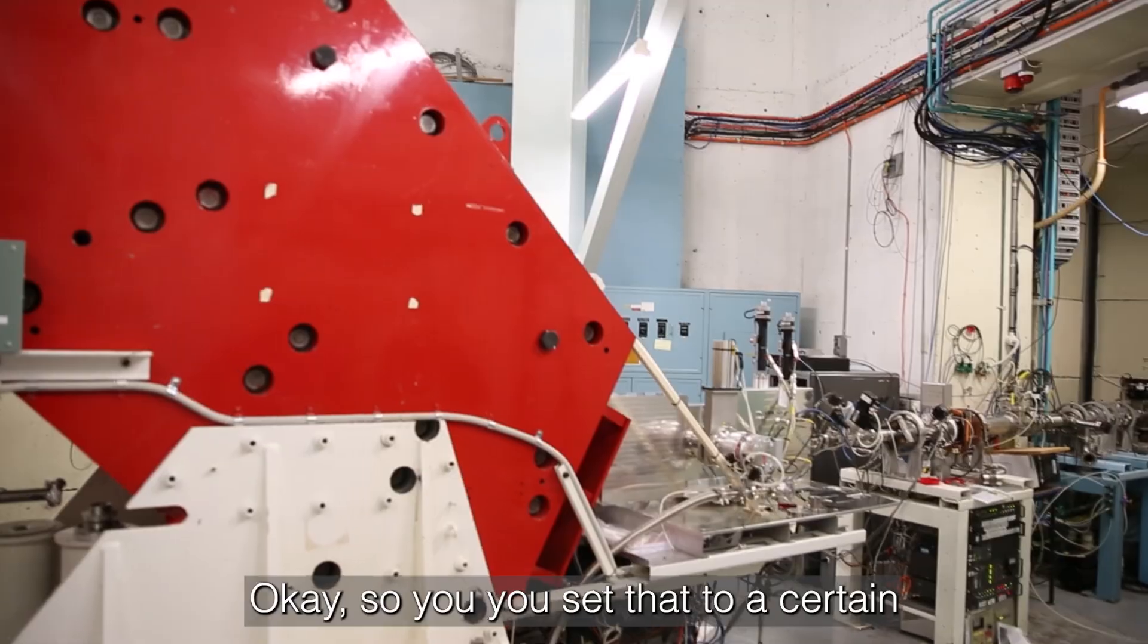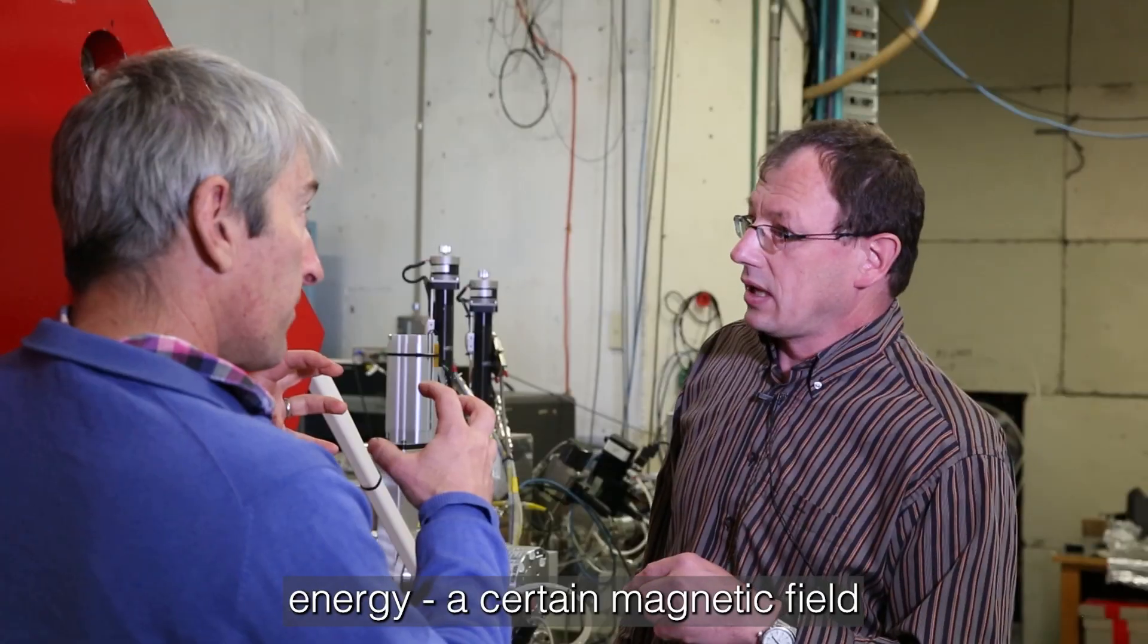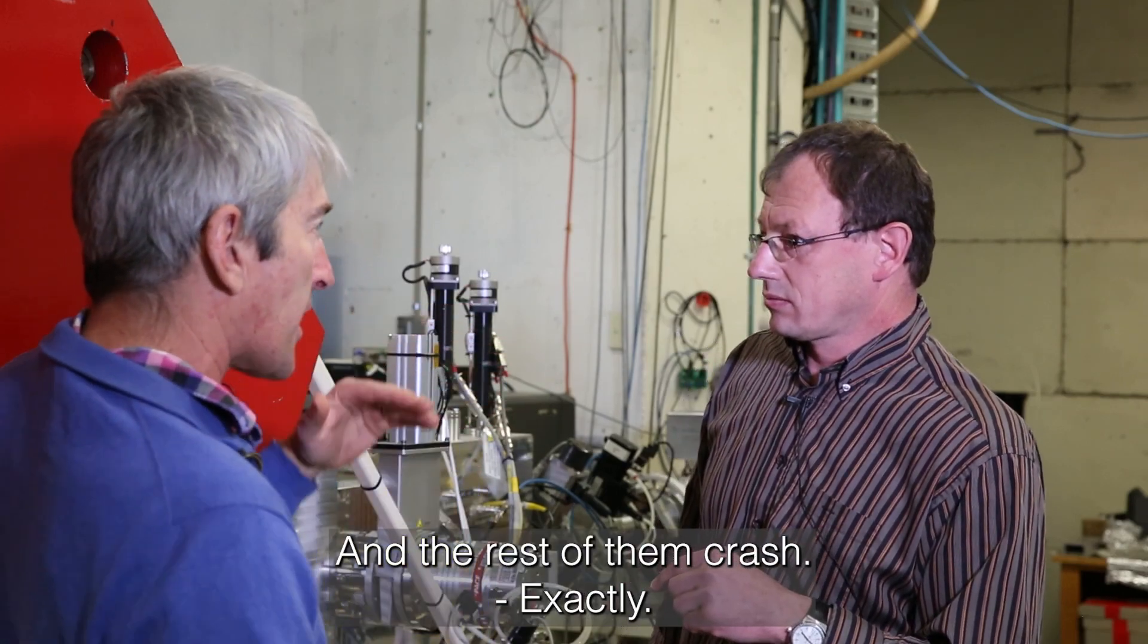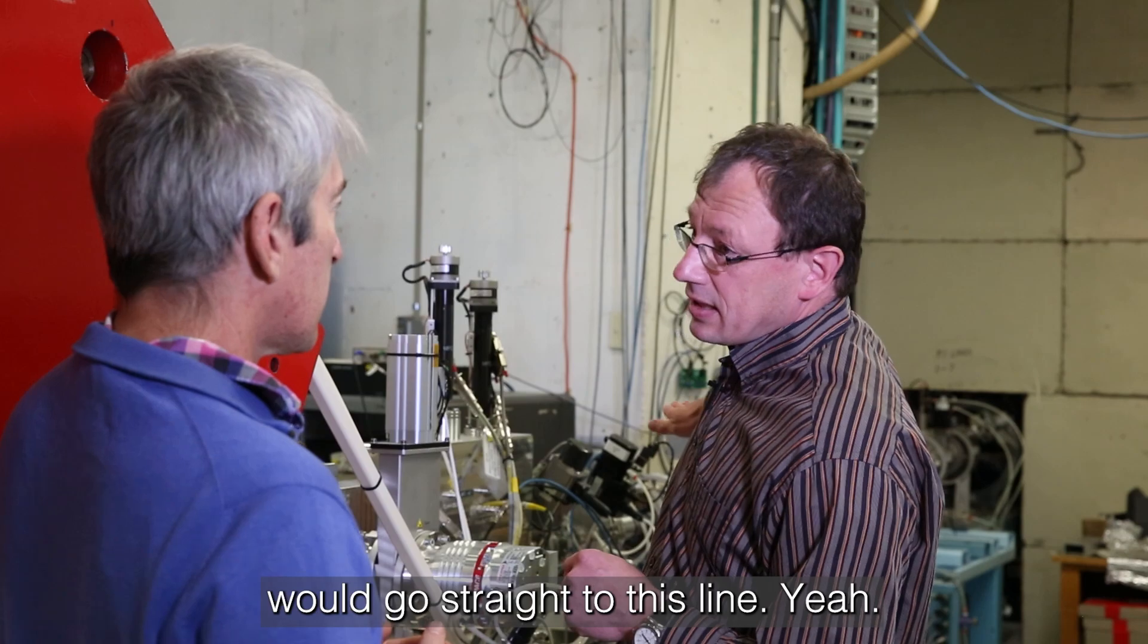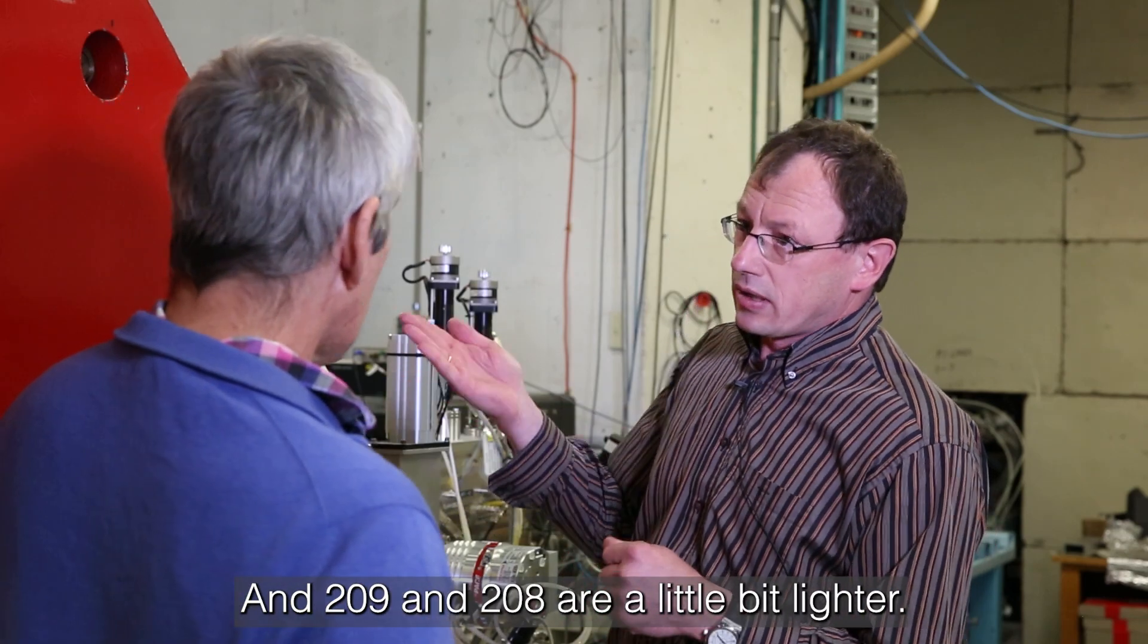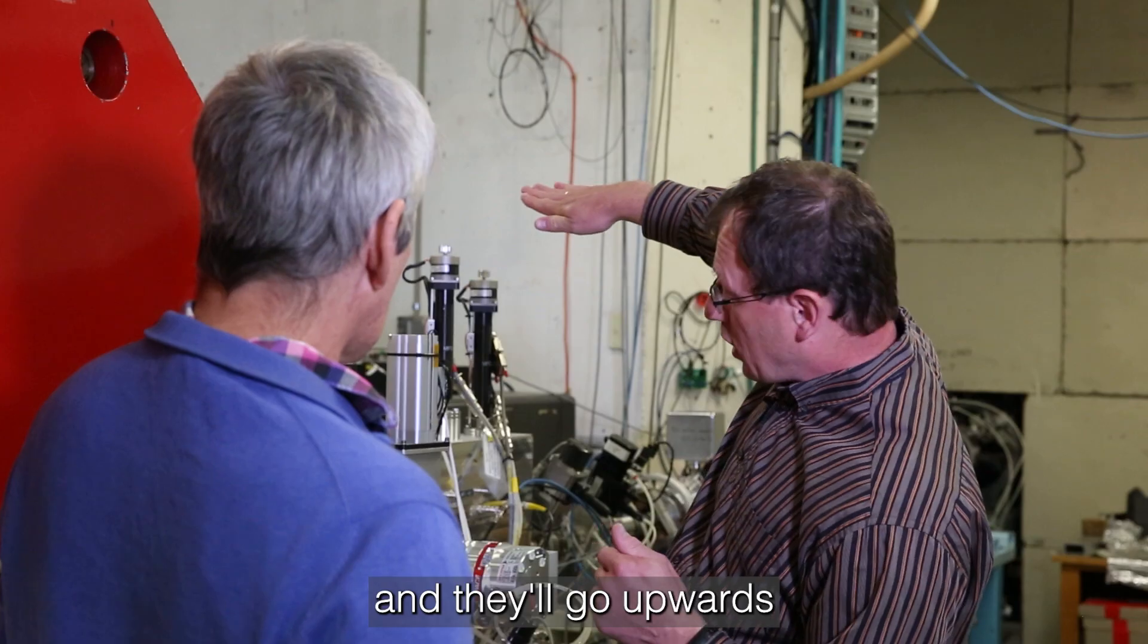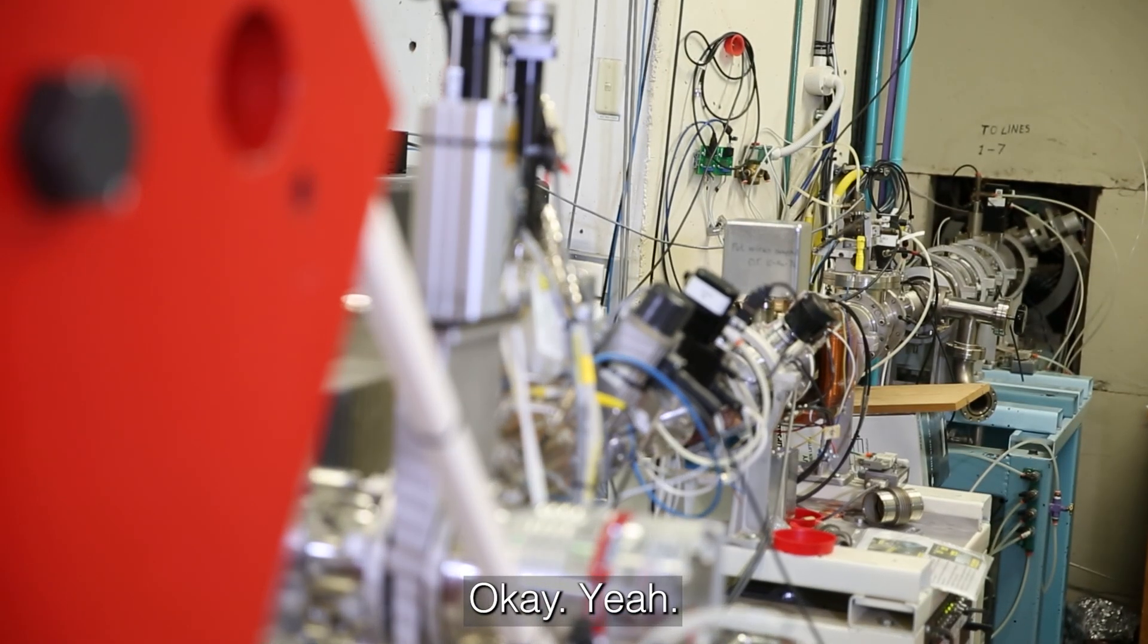Okay, so you set that to a certain energy, certain magnetic fields, and that means that only the right ones will make it around the corner and the rest of them crash. Exactly, so the mass 210 would go straight this line and 209 and 208 are a little bit lighter so they are bent a little bit more and then go upwards and cannot make it the way into the detector.